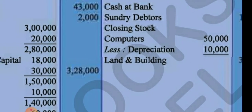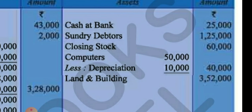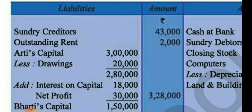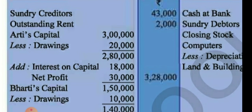Now we are going to make the balance sheet. On the asset side: cash at bank as given in the trial balance, then sundry debtors, closing stock, and computer ₹50,000 less ₹10,000 depreciation, then land and building — all copied from the trial balance. On the liability side: sundry creditors, outstanding rent for one month ₹2,000, then Aarti's capital: ₹3,00,000 less drawing ₹20,000.